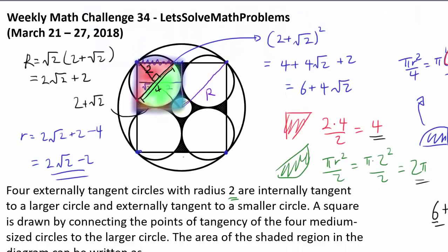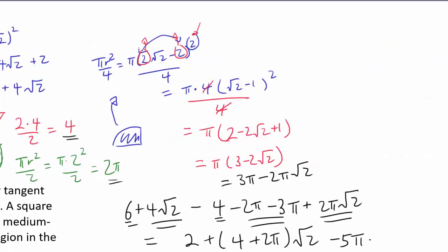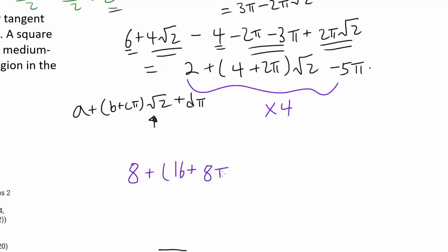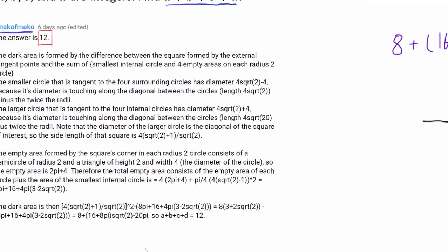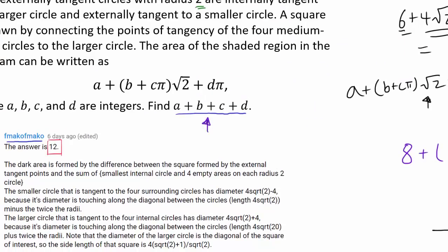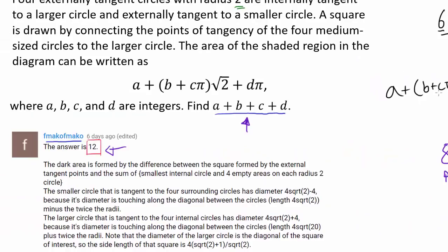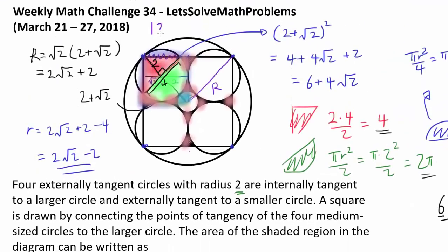That's the area of one pink region. We multiply by 4 to get the total shaded area: 4 × [2 + (4 + 2π)√2 − 5π] = 8 + 16√2 + 8π√2 − 20π. We want A plus B plus C plus D, where A = 8, B = 16, C = 8, D = −20. So 8 + 16 + 8 + (−20) = 12. And thankfully we got the same answer as F. Mako — our final answer is 12.